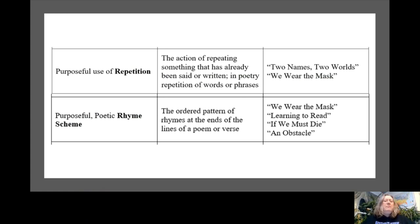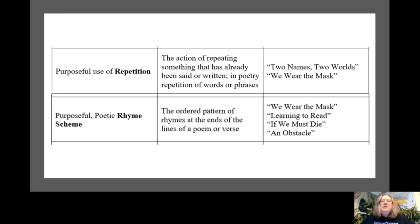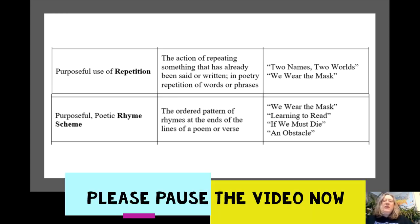Next we have purposeful poetic rhyme scheme. Rhyme scheme is the ordered pattern of rhymes at the ends of the lines of a poem or verse. Write this definition down in your packet on page 108, because you will need to use this in your 'If We Must Die' and 'An Obstacle' poem and you'll want to be able to reference it. Please pause this video now and write this definition in your 'To Kill a Mockingbird' packet.